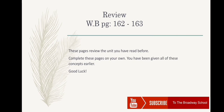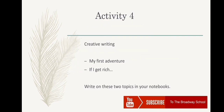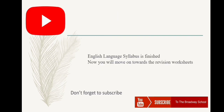Review — workbook pages 162 to 163. These pages review the unit you have read before; complete them on your own, as all these concepts have been covered earlier. Activity 4 — Creative Writing: you are given two topics: 'My First Adventure' and 'If I Get Rich.' Think about these topics and do the creative writing in your notebooks. The English language syllabus is now finished.